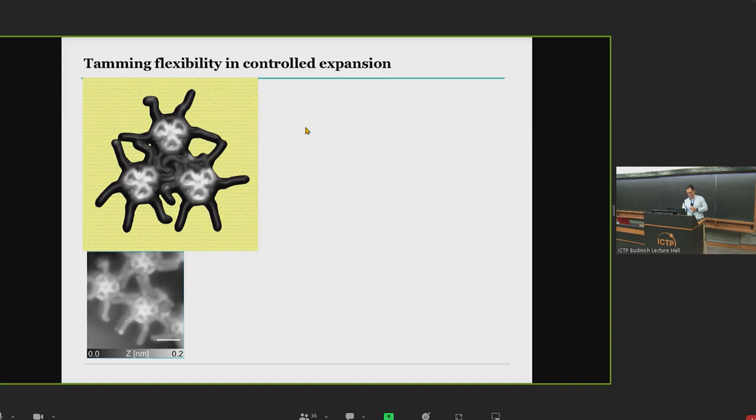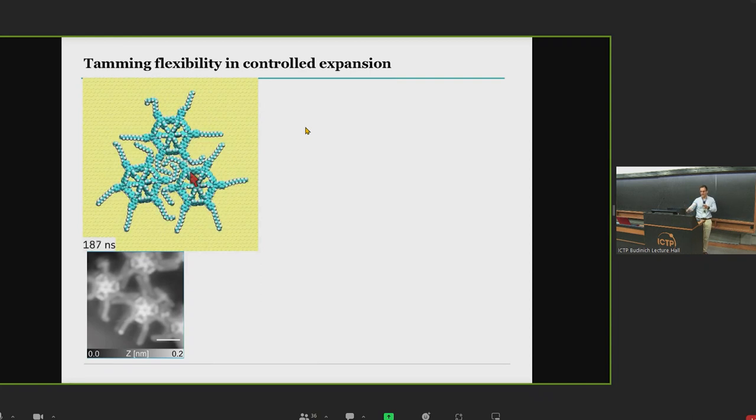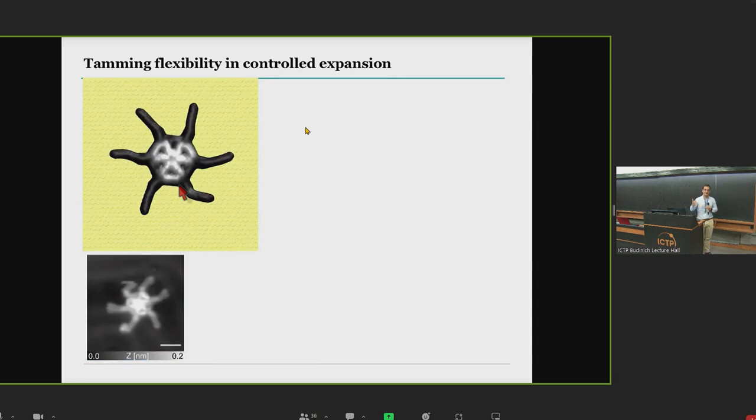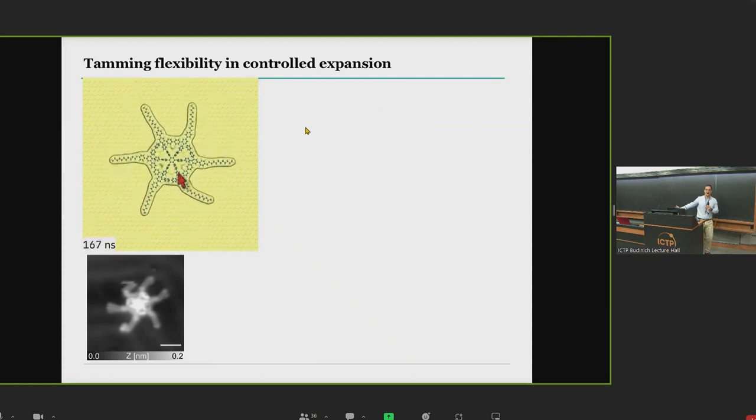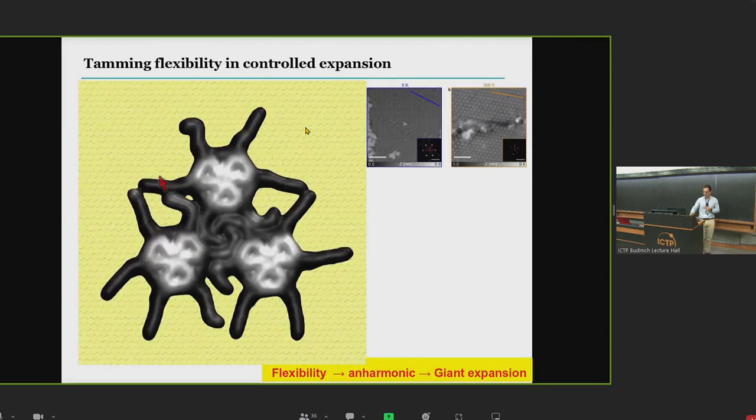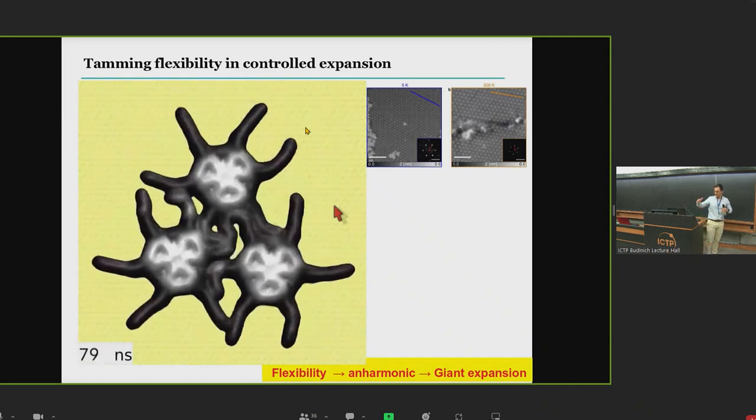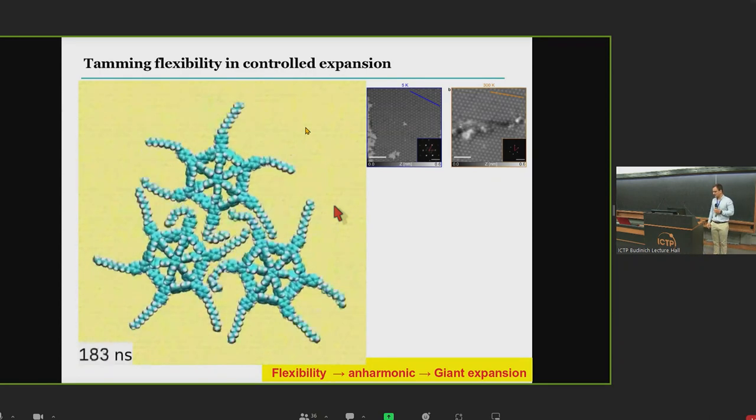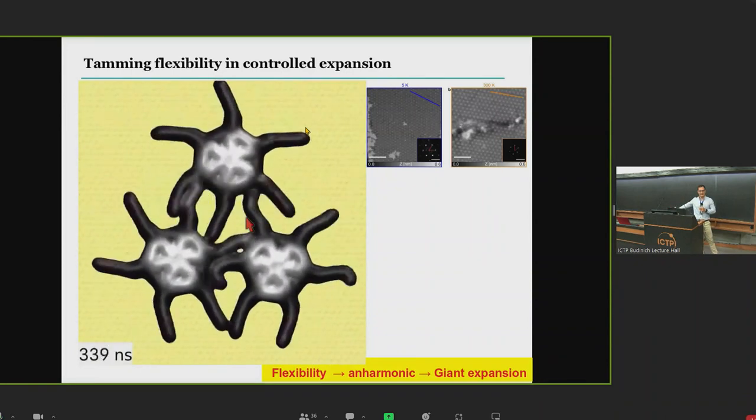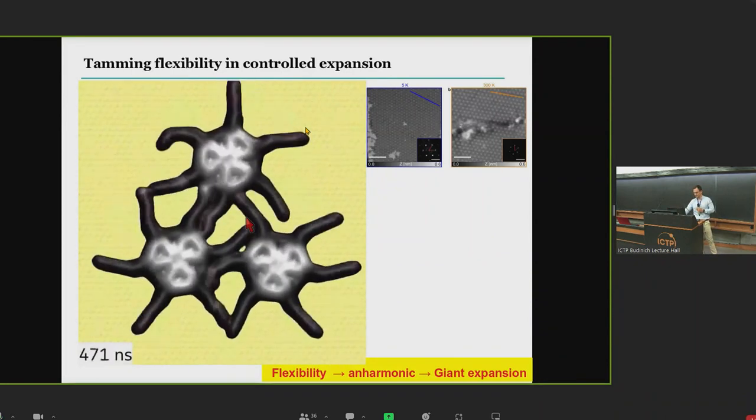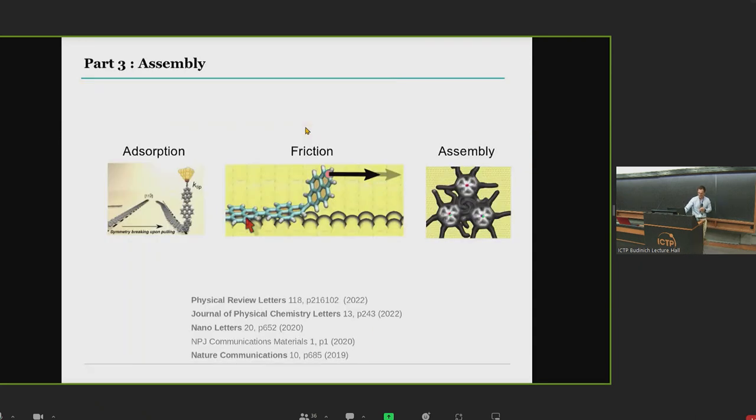That is actually the flexibility of the chains. When you're at low temperature, the system compacts to increase the interaction between the molecules. However, when you increase the temperature, this changes. This is the molecule at 300 Kelvin, and you can see that although you have energy to move the chains, you still cannot diffuse the molecule. However, the assembly, when you gather these fluctuations, they lead to this thermal expansion. These anharmonic fluctuations of the flexible side chains allow us to reach this giant thermal expansion.